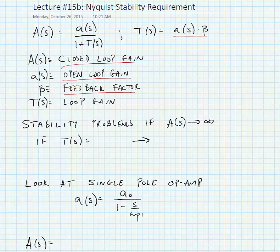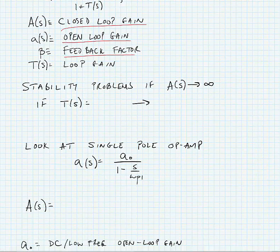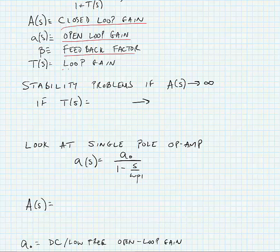Beta is the feedback factor. This is determined by typically a passive network, like a resistor-divider network. And big T sub s is the loop gain.